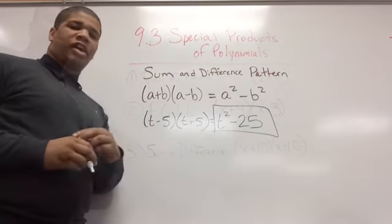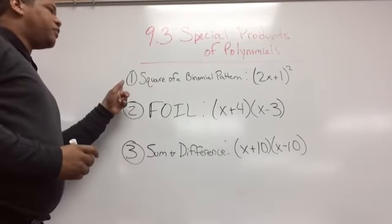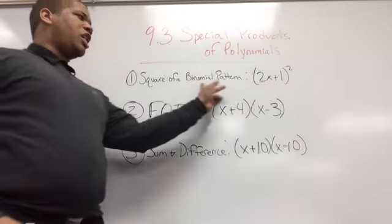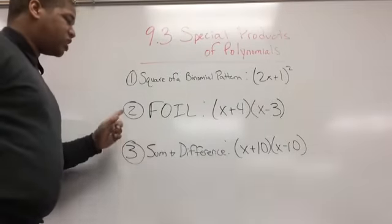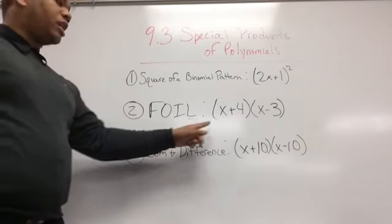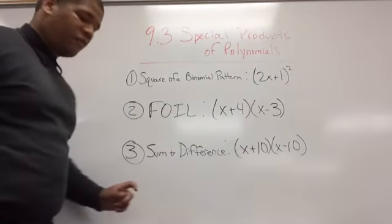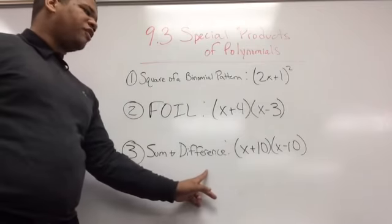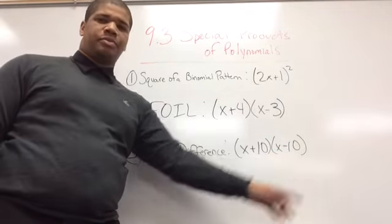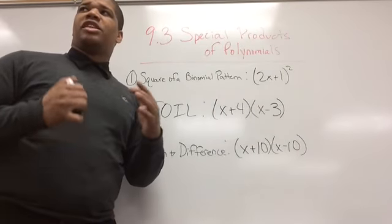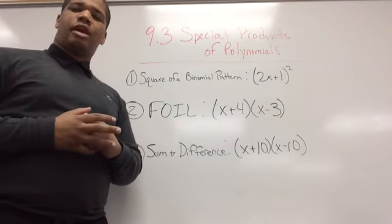For your practice problems, I want you to do three things. For the first one, use the square of a binomial pattern and work out (2x + 1) squared. For the second one, use FOIL and multiply (x + 4) times (x - 3). For the third one, use the sum and difference pattern and do (x + 10) times (x - 10). Remember to take a picture of these and submit them as an assignment on Edmodo. Good luck!